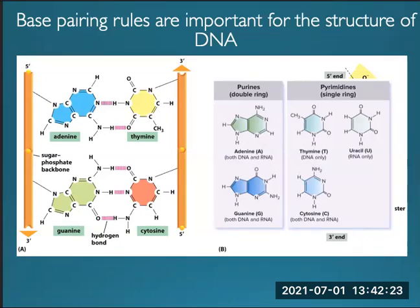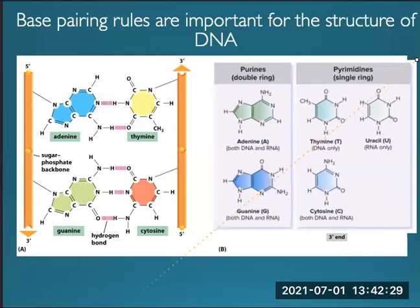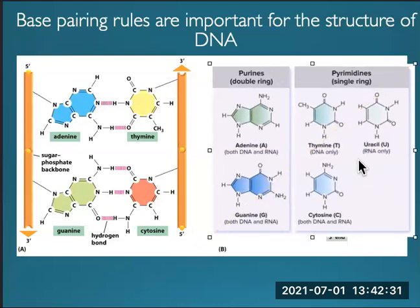If we think back to the structure of DNA, we have two different categories of nucleotides or nitrogenous bases in our DNA. These are purines, which have a double ring structure, and pyrimidines, which have a single ring structure. Of course, you could ignore the uracil here because that's in RNA. We're going to focus on DNA right now.